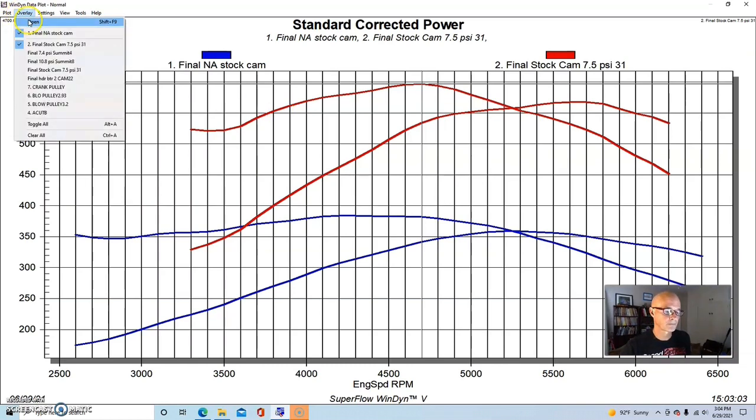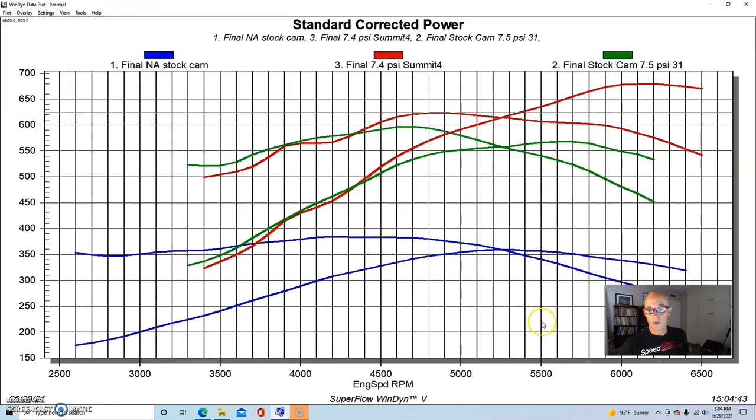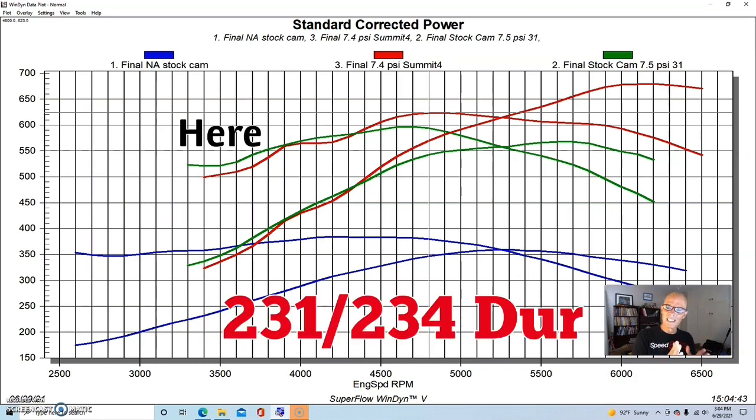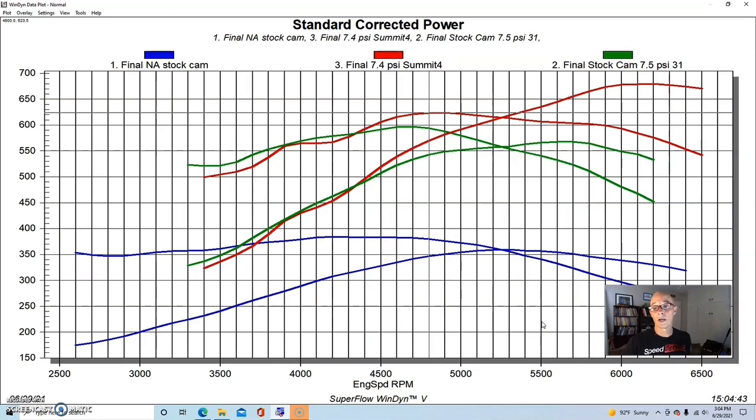But the question is, and this is for basically every LS owner: what happens when we then add a camshaft? What happens when we add a camshaft to this kind of boosted application and run it basically at the same power level? As we can see, the camshaft made about the same low speed power down below 4200 or so, maybe a touch less, but then did make more power, quite a bit more power at the top, even running at the same boost level. 7.4 pounds versus 7.6 at the peak versus 7.7.